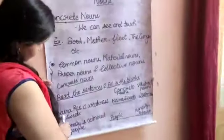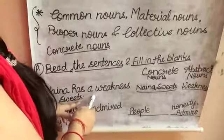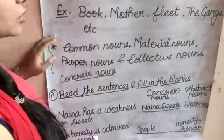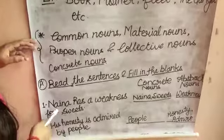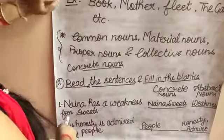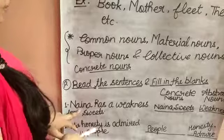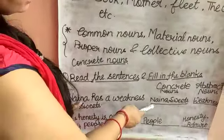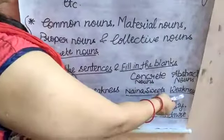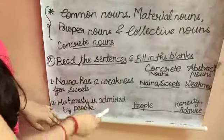So what is the Concrete Noun? 'Nana has a weakness of sweets.' Here you can see the first sentence. What is the Concrete Noun and the Abstract Noun? We can feel it — we can't touch or see it. Nana is a Proper Noun because we have a particular name, so Nana will be Concrete Noun. Weakness is not visible, so this is an Abstract Noun. And sweets are found in Common Noun, so it will be Concrete Noun.